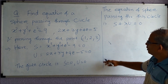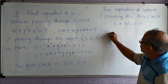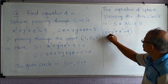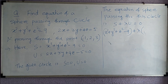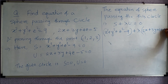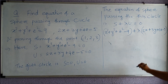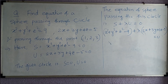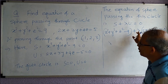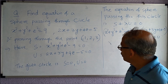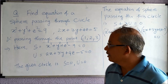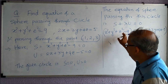Substituting, we get: x squared plus y squared plus z squared minus 9, plus λ times (2x plus 3y plus 4z minus 5) equal to zero. This is our equation of the sphere. The only thing required now is to find the value of λ, and for that we will use the condition that the sphere passes through the given point.